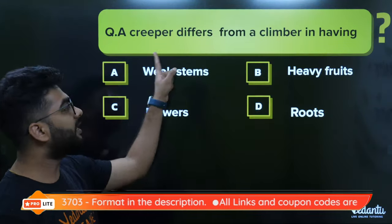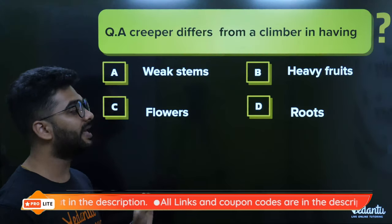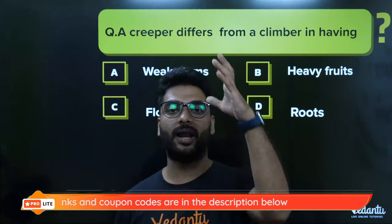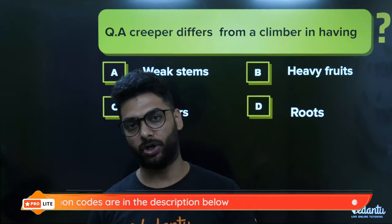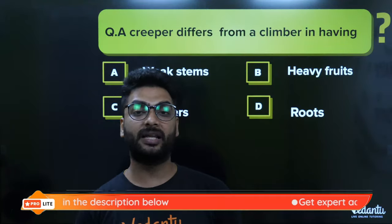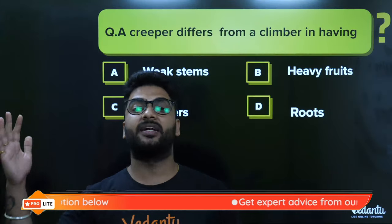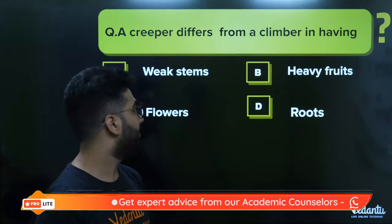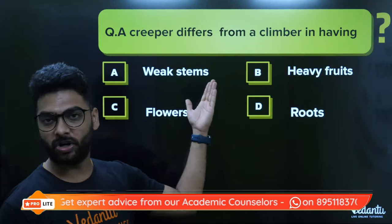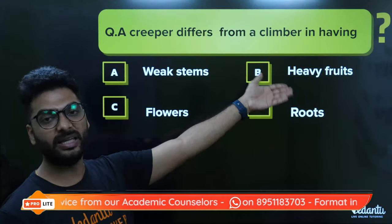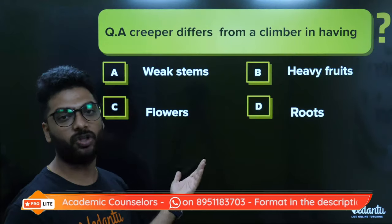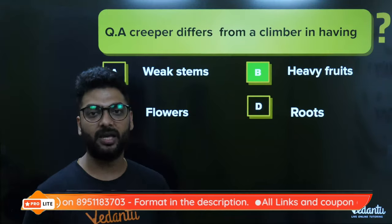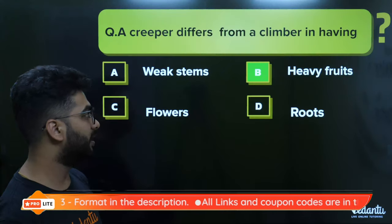Next question: a creeper differs from a climber in habit. We know that a climber needs support to climb up, like the pea plant, the bitter gourd, and the money plant. But a creeper spreads on the ground and has huge fruits like watermelon and pumpkin. Both have a weak stem, but heavy fruits are seen only in creepers. Both have flowers and roots, so heavy fruits is the distinguishing feature of creepers.